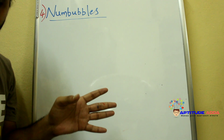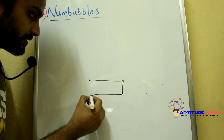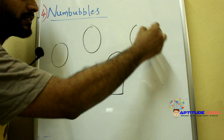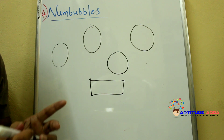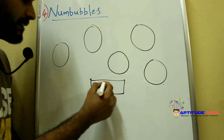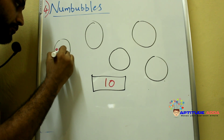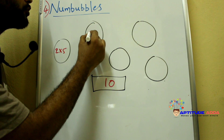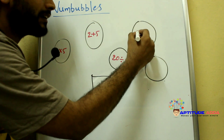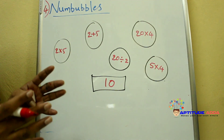I will tell you how to clear this Numbubbles section. If you see the screen, at the bottom of the screen you will find one number, and there will be bubbles on the screen which appear and disappear after 3 seconds. For example, take a number like 10 at the bottom of the screen. On each bubble, numbers will change — on one bubble you may see 2 into 5, on another 2 plus 5, on another 20 divided by 2, and on another 20 into 4 and 5 into 4. Like this you can see different different numbers.